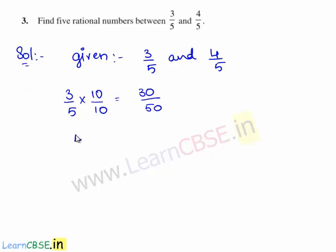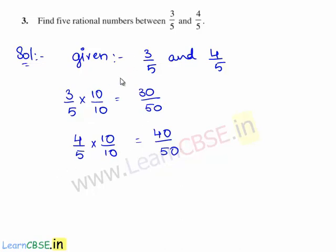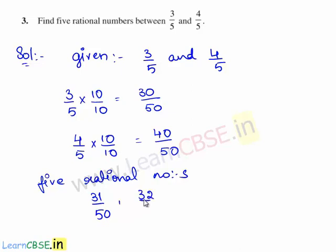Now we shall also consider 4 by 5 and multiply it with 10 on both the numerator and denominator. So we get 4 times 10 is 40 by 5 times 10 is 50. So we have obtained the equivalent rational numbers for 3 by 5 and 4 by 5. Therefore, the 5 rational numbers between 3 by 5 and 4 by 5 are 31 by 50, 32 by 50, 33 by 50, and 34 by 50.